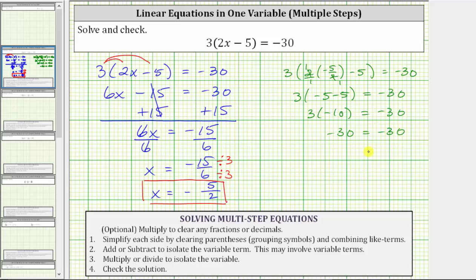Negative 30 equals negative 30 is true. Verifying the solution is correct.